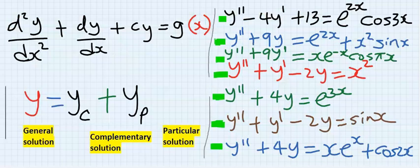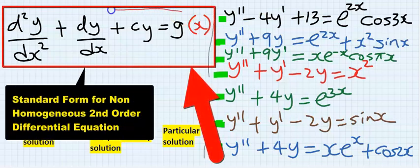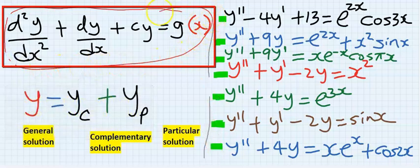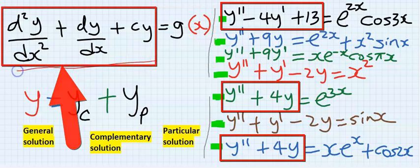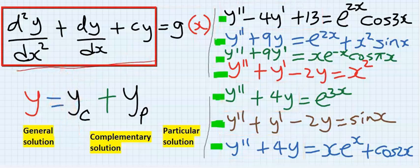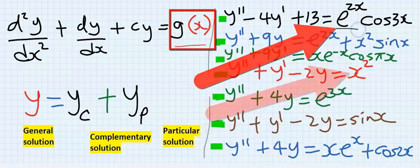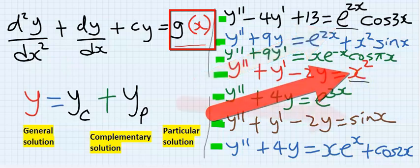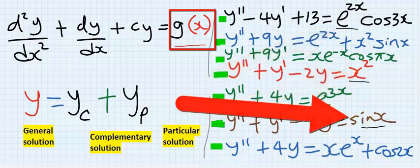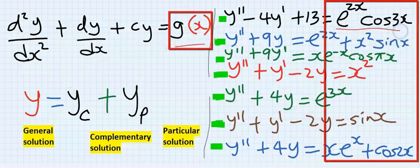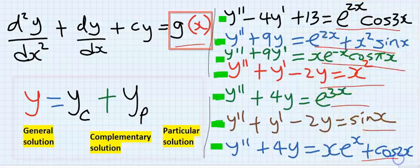The standard form of a non-homogeneous equation is usually in this order, where the left-hand side is a function of a derivative, and the right-hand side is a function of either an exponential, a polynomial, or a trigonometric function. Hence, g(x) is any function on the right-hand side after the equal sign.